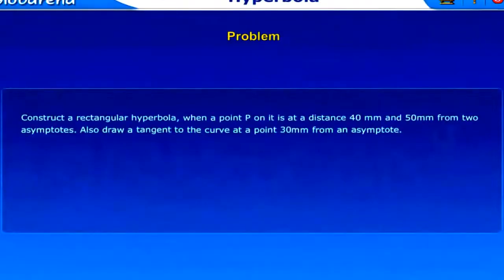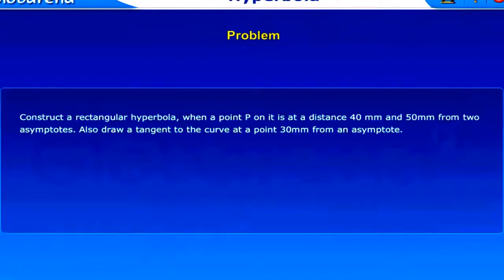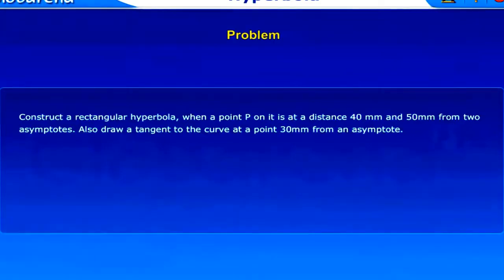Problem: Construct a rectangular hyperbola when a point P on it is at a distance 40mm and 50mm from two asymptotes. Also draw a tangent to the curve at a point 30mm from an asymptote.